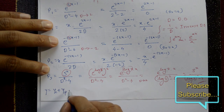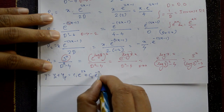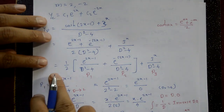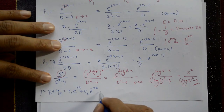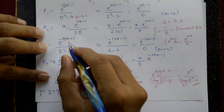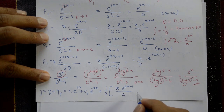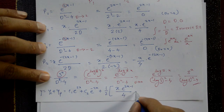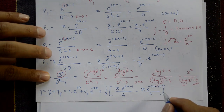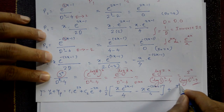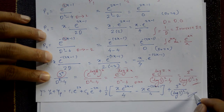The complete solution is y = yc + yp: y = c₁e^(2x) + c₂e^(-2x) + (1/2)[x·e^(2x-1)/4 - x·e^(-(2x-1))/4] + 3^x/((log3)² - 4). This is the required complete solution.